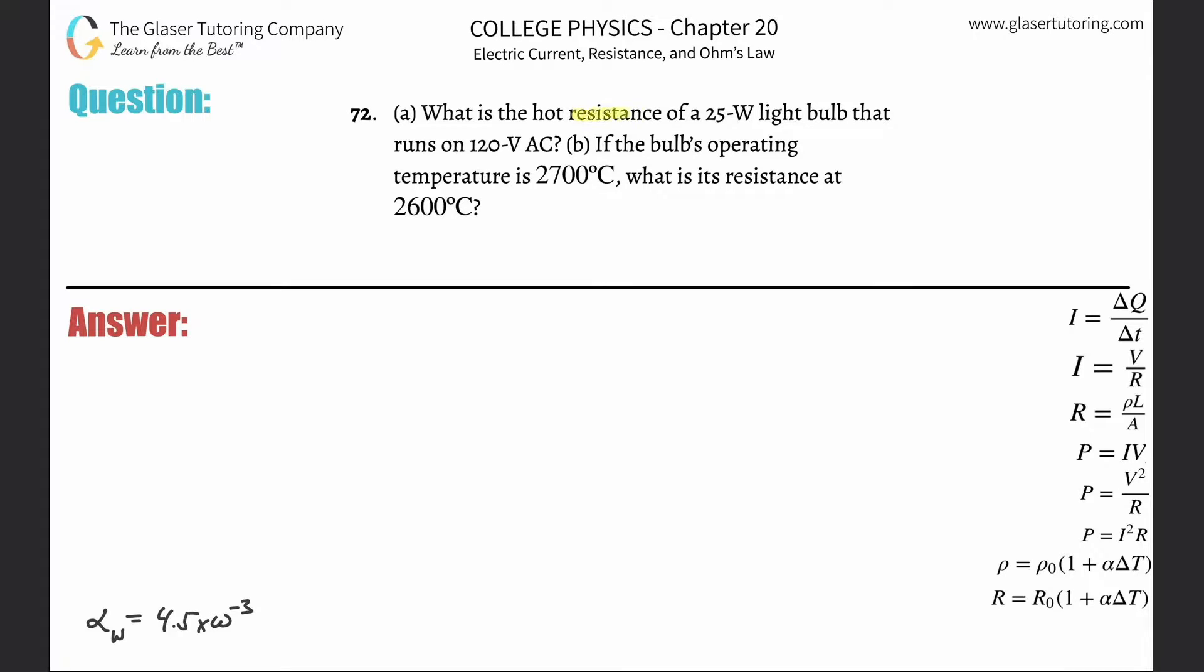Number 72, letter A. What is the hot resistance of a 25 watt light bulb that runs on 120 volt alternating current?